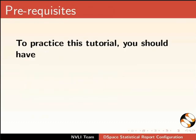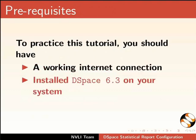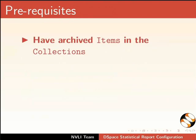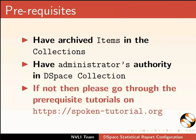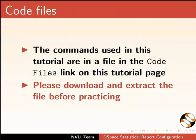To practice this tutorial, you should have a working internet connection and installed DSpace 6.3 on your system. Tomcat service should be running. Have archived items in the collections, and have administrator's authority in DSpace collection. If not, please go through the prerequisite tutorials on this website. The commands used in this tutorial are in a file in the code files link on this tutorial page. Please download and extract the file before practicing.